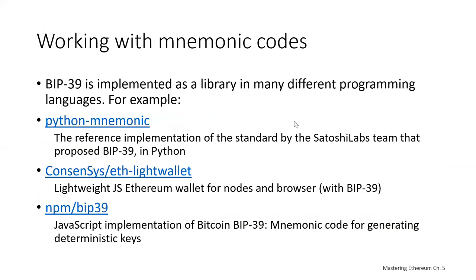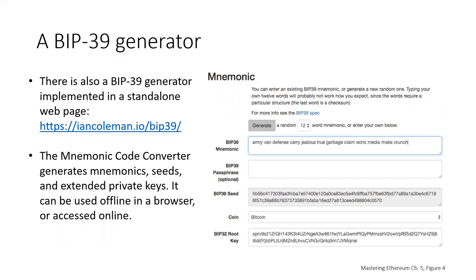BIP39 is implemented as a library in many different programming languages — Python, C, JavaScript, and others. There are BIP39 generators available online, like a code converter you can use to check out how it works.